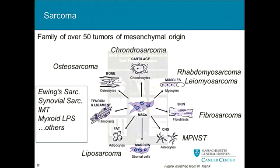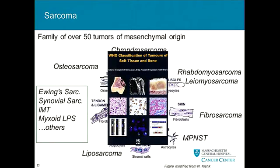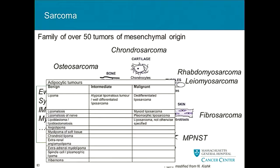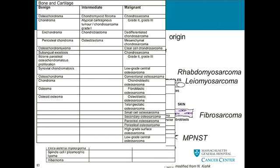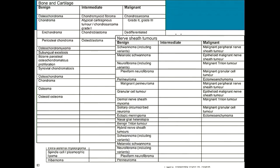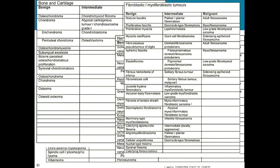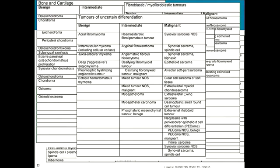To help organize these, there is the WHO classification book — a 200 to 300 page book. It gets very complicated very quickly. Just taking, for example, all fat-derived tumors: we have benign, intermediate, and malignant, and even within these we have different histologies. We can also look at bone and cartilage, nerve sheath tumors, myofibroblastic tumors, vascular tumors, and tumors of uncertain differentiation. You can see very quickly how complex this gets.